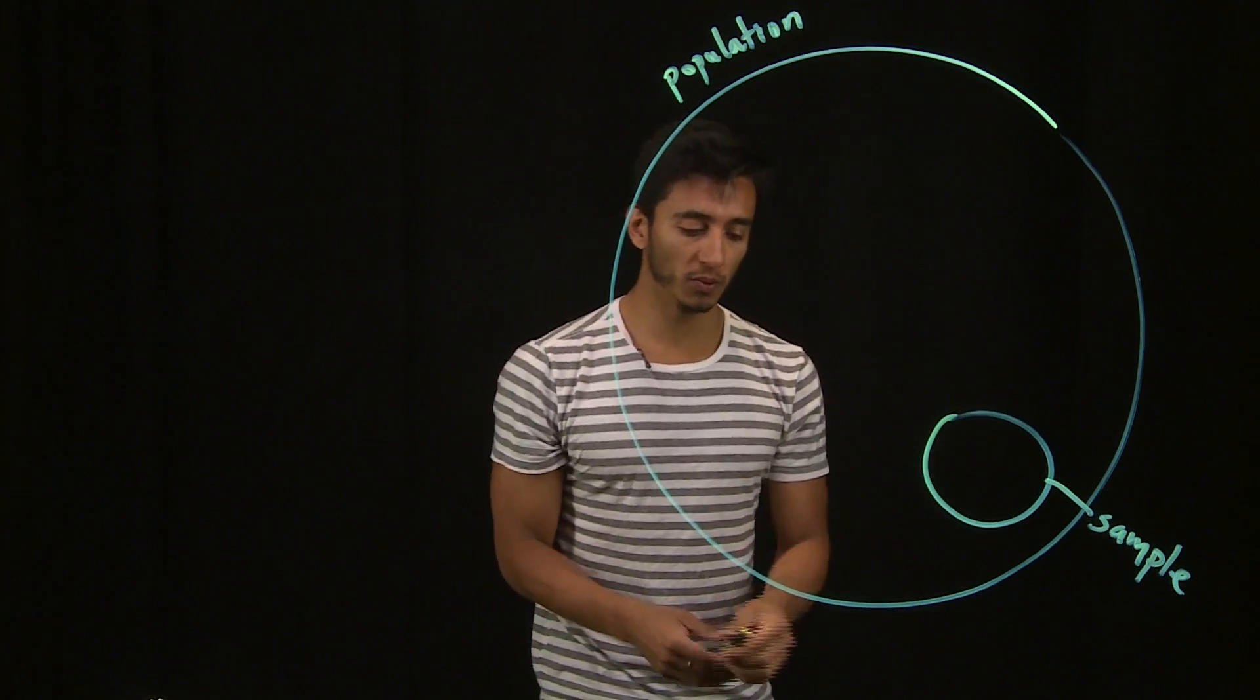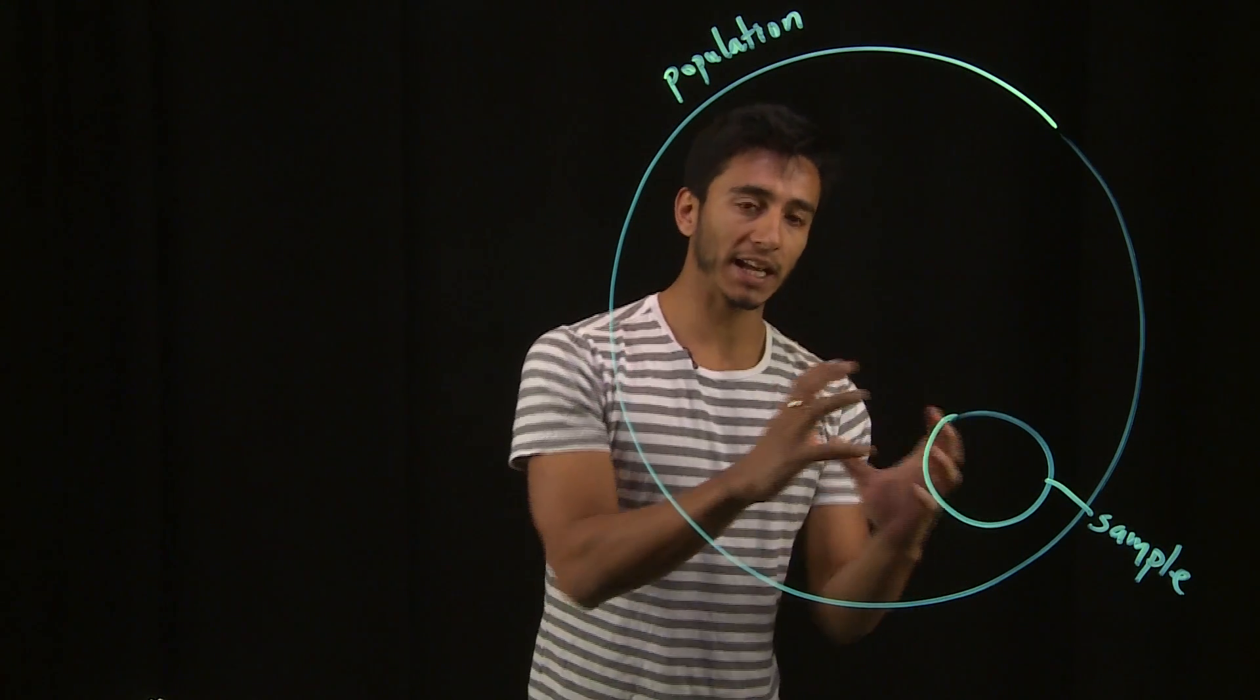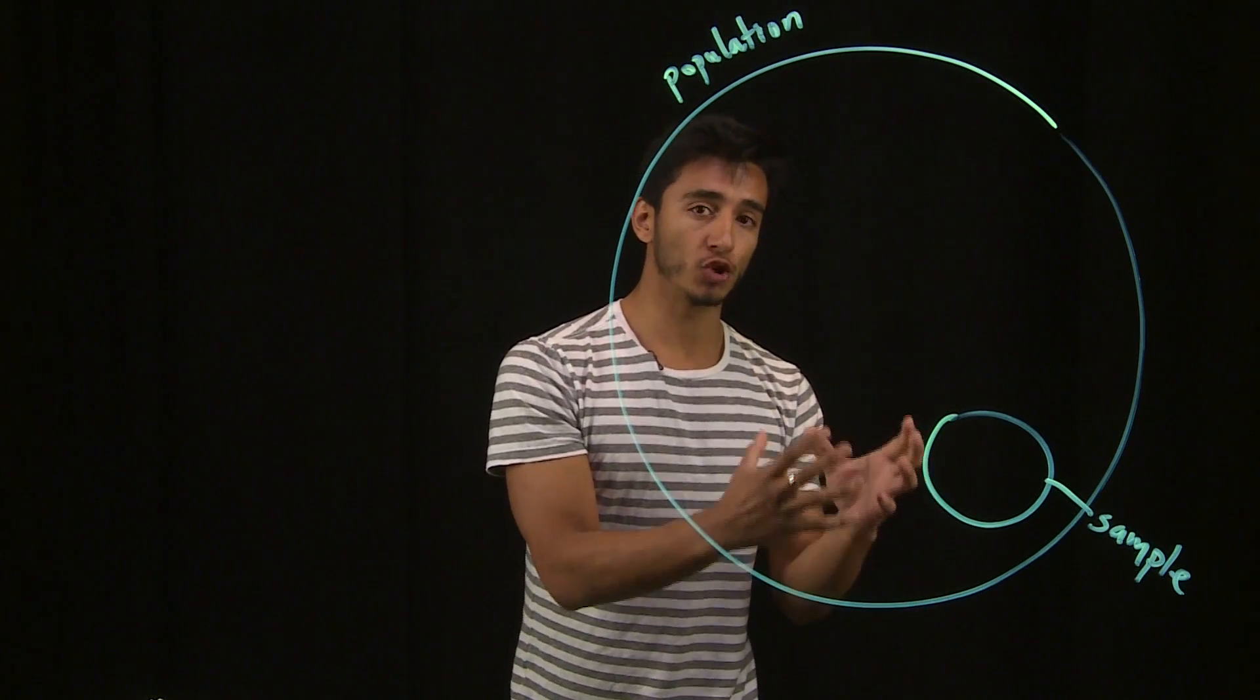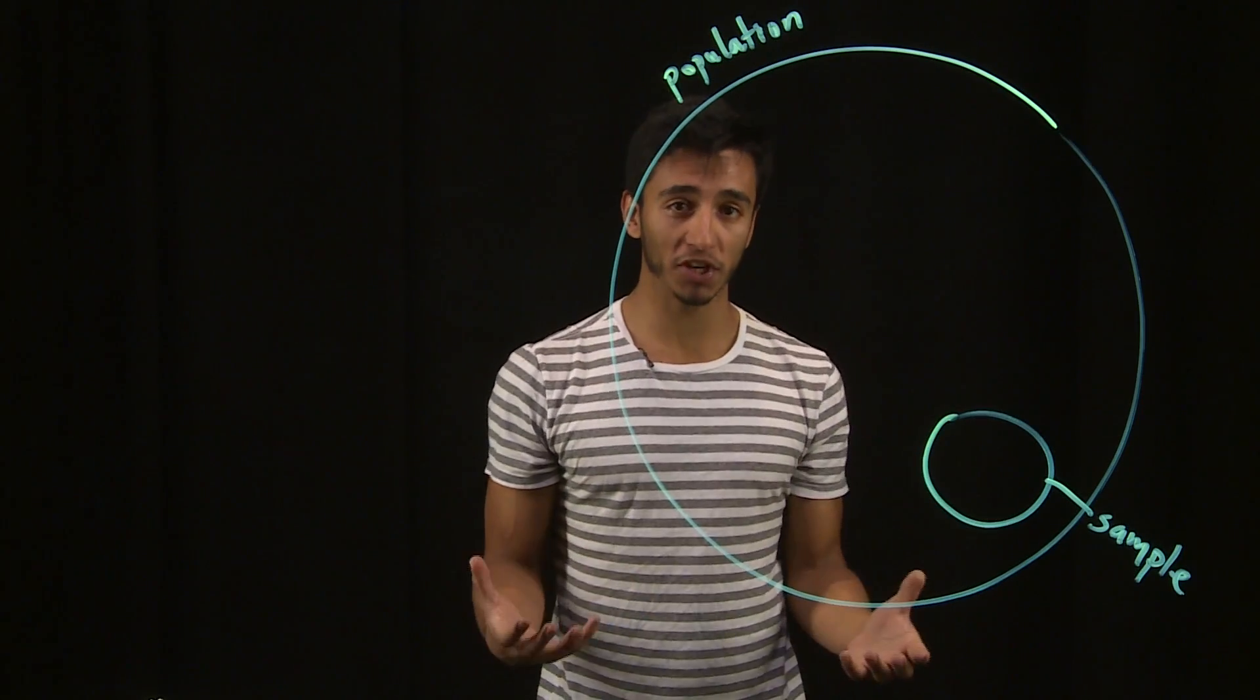So what we would do is we would grab a subset or a collection of students, understand their GPA, and then draw conclusions about the GPA of the entire population of students.